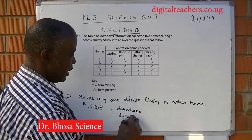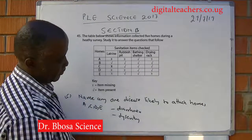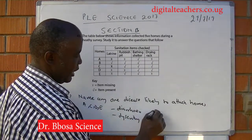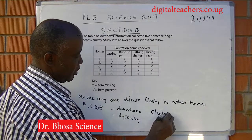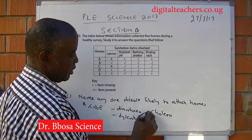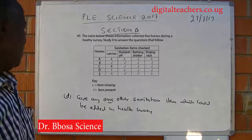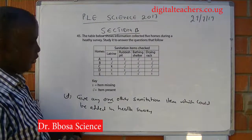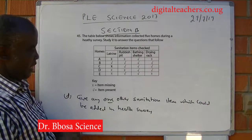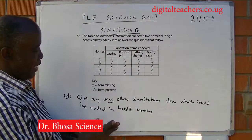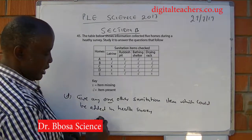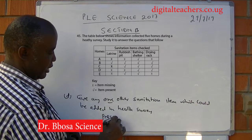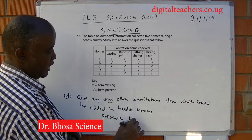Name one disease likely to attack homes A, C, D and E. The diseases are diarrhoea, dysentery, and cholera. Give anyone additional sanitation item which could be added in the HDP survey. That is the presence of a chicken run.